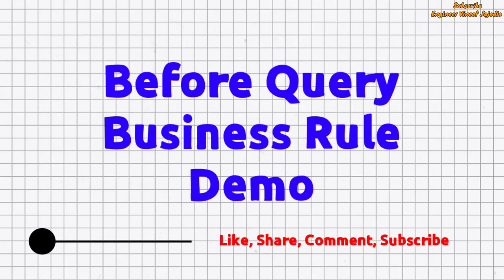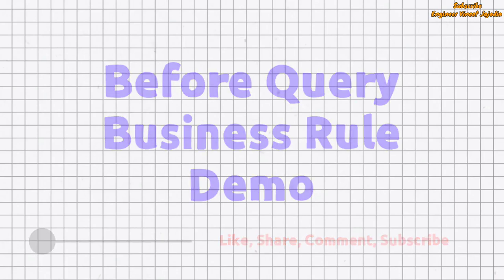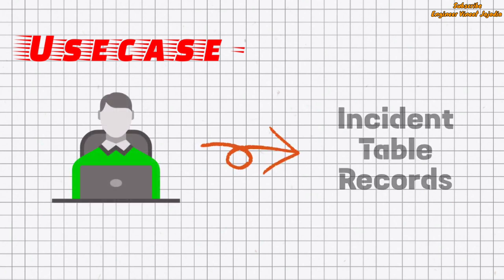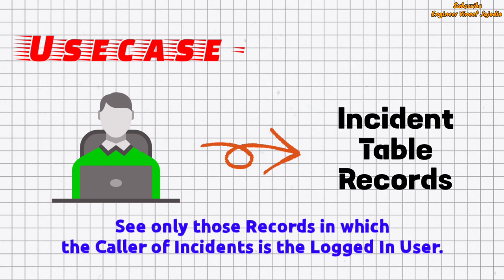Let's see the demo of the 'before query' business rule. In this demo, the use case is that if any user accesses the incident table records, they should only see those records in which the caller of the incident is the logged-in user — meaning the caller of the incident is the same as the user who is accessing the incident table records.